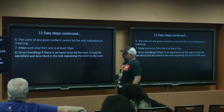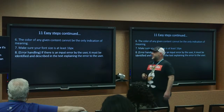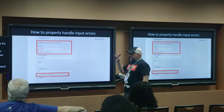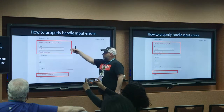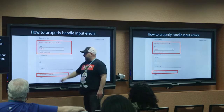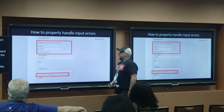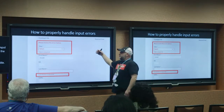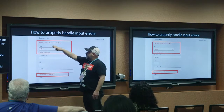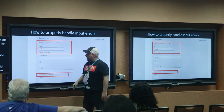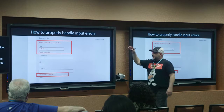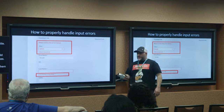Number eight: error handling. If there's an input error by the user, it must be identified and described in text explaining the error to the user. It's much easier than it sounds. You go to a contact form, forget to add the title, forget to add your last name, hit enter — your form should speak to the individual like this: 'Please review your errors below. Title is required. Last name is required.' That tells them where they went wrong, and they're able to sift through that and add the proper information.